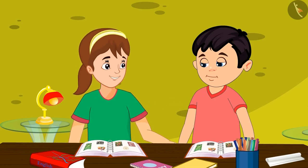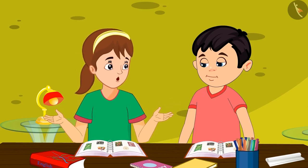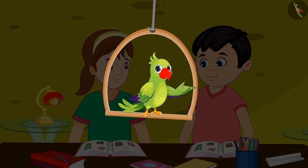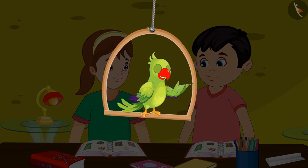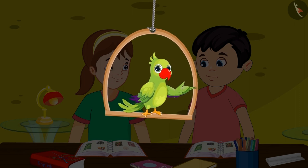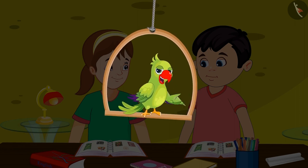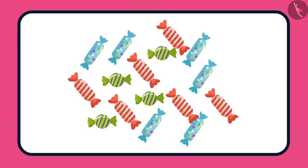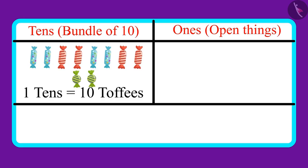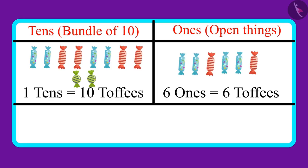You have understood the topic of tens and ones quite well. Children, have you also understood this topic properly? Come on, let's see. These are some toffees. There are one tens and six ones in that number. Can you tell me how many toffees are there in all?